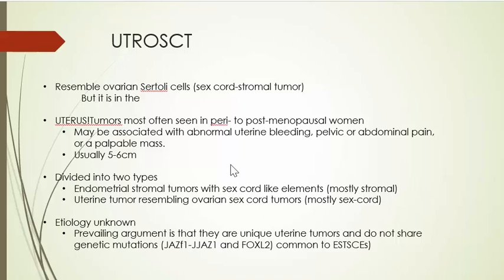UTROS in humans are divided into two types. Group one are endometrial stromal tumors with sex cord elements — these tumors are mostly stromal, which did not resemble our cases. Our four baboon tumors fall more into the group two type, which is largely ovarian sex cord tissue. In humans, the etiology is unknown, and the two groupings are probably considerably different, because UTROS do not have the same genetic mutations common to endometrial stromal sarcomas.